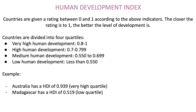Countries are divided into four quartiles: very high human development, medium human development, and low human development. For example, Australia has an HDI of 0.939, which is in the very high quartile. Contrastingly, Madagascar has an HDI of 0.519, which places it in the low quartile.